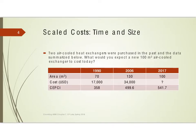What we want to do in this example is look at what if we have something where the data changes both size and time. So in this particular case we have an air-cooled heat exchanger purchased in 1990 and another one in 2006. The first one was 70 square meters, the second one was 130 square meters. Today I want to buy one that's 100 square meters.